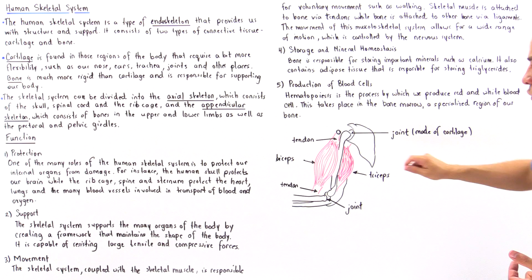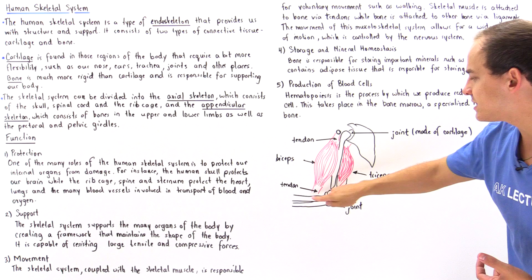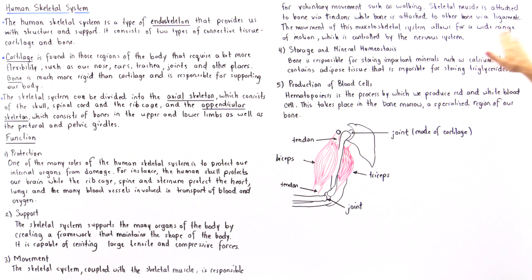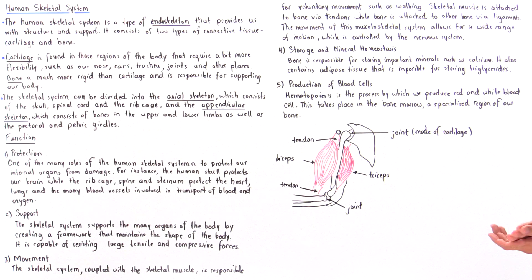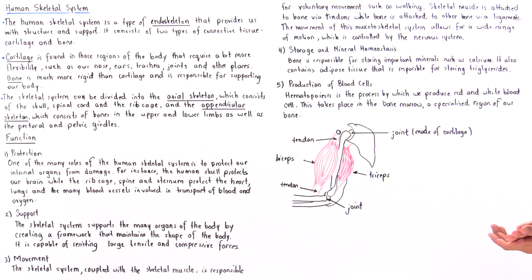Skeletal muscle is attached to bone via tendons, as shown in this diagram. We have the biceps, we have this tendon attached to our bone, we have a tendon on this side also attached to our bone, and our bone is attached to another bone via ligaments. Now the movement of this musculoskeletal system allows for a wide range of motion that is ultimately controlled by our nervous system. The nervous system coordinates with the musculoskeletal system to basically create this type of voluntary motion.